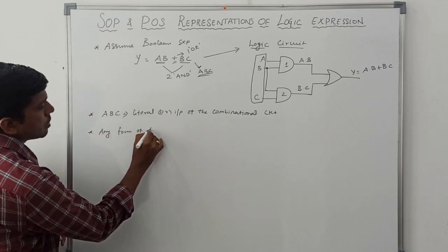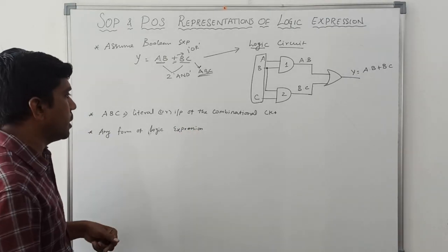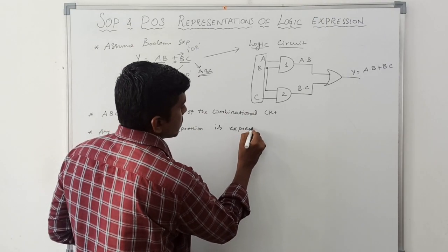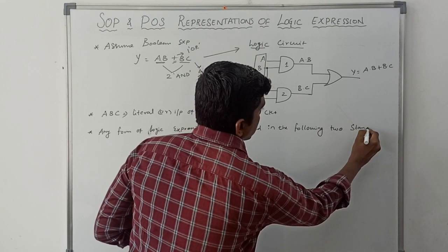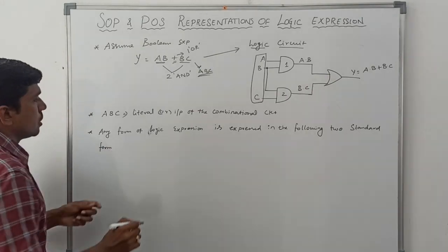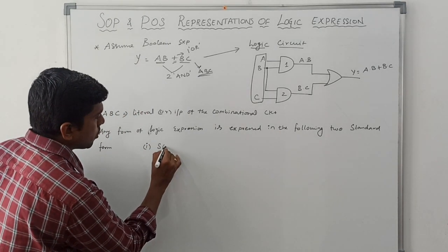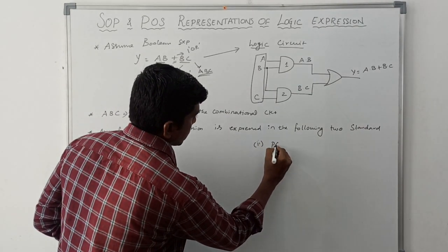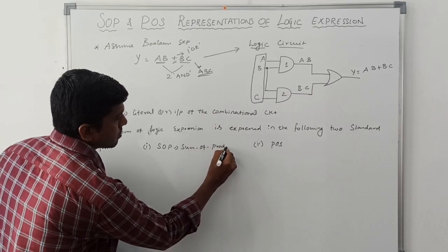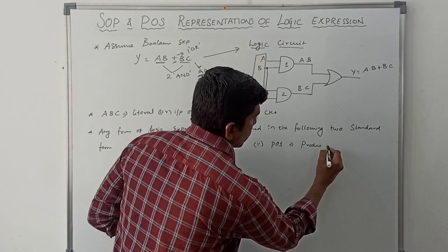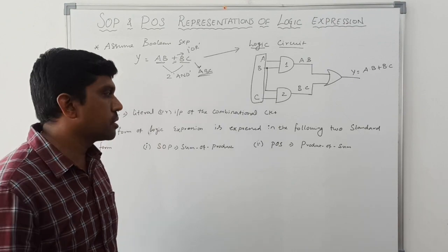Any form of logic expression or Boolean expression can be expressed in the following two standard forms. The first one is SOP and the second one is POS. SOP means Sum of Product, and POS means Product of Sum. These two standard forms are used for minimizing Boolean expressions. We will discuss them one by one.